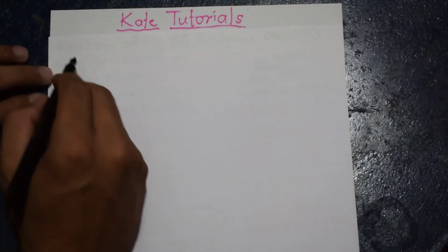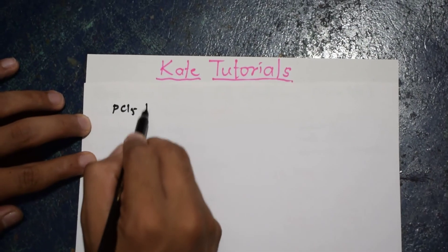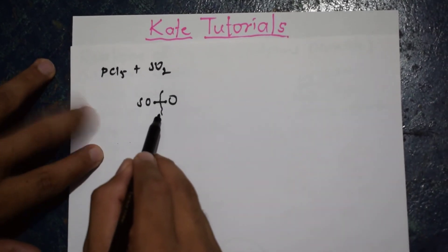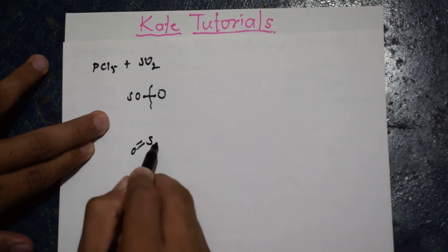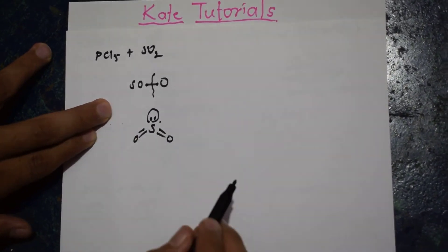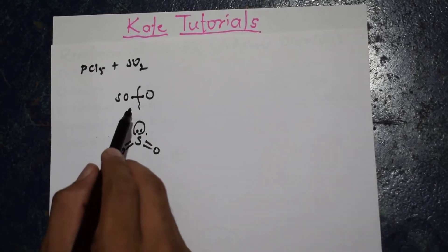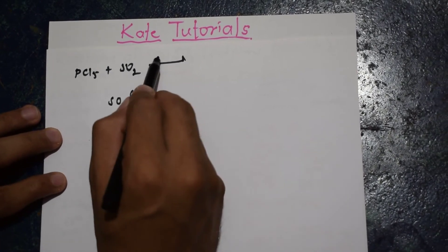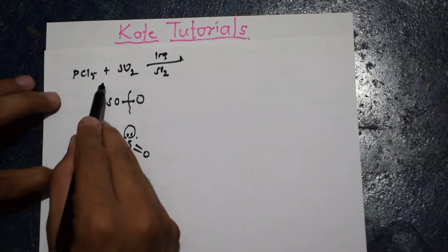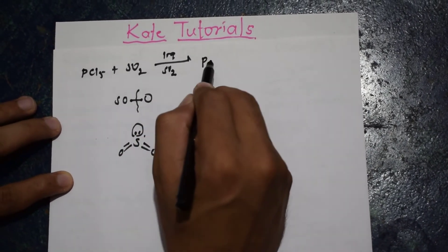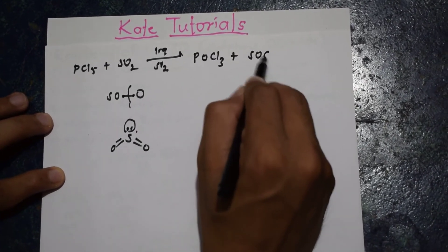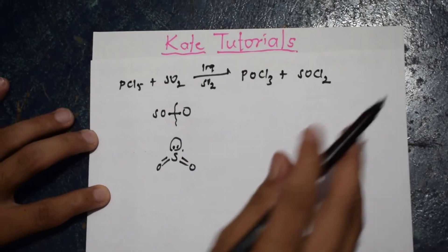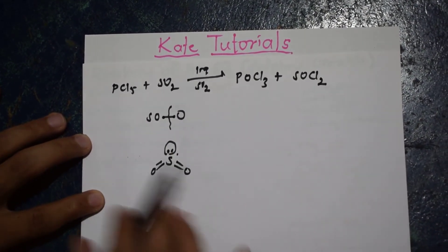Consider PCl₅ plus SO₂. Sulfur dioxide will break — the actual structure of SO₂ is S double bond O double bond O with a lone pair of electrons. In the solvolysis, one oxygen adds to one component and the other oxygen adds to the other component. PCl₅ plus SO₂ in liquid sulfur dioxide gives POCl₃ plus SOCl₂. This is the solvolysis reaction occurring in liquid sulfur dioxide.